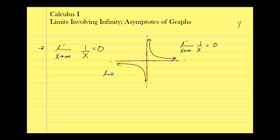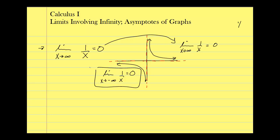I could also look at the limit as x approaches negative infinity. As I approach negative infinity, the same thing happens — it's getting closer and closer to 0, like 1 over negative 100, 1 over negative 1,000,000,000,000. That's going toward 0 as well. I'm not comparing limit from the right and limit from the left; I'm just taking this overall limit on each side. These are limits involving infinity, not necessarily as solutions but as a limiting value.